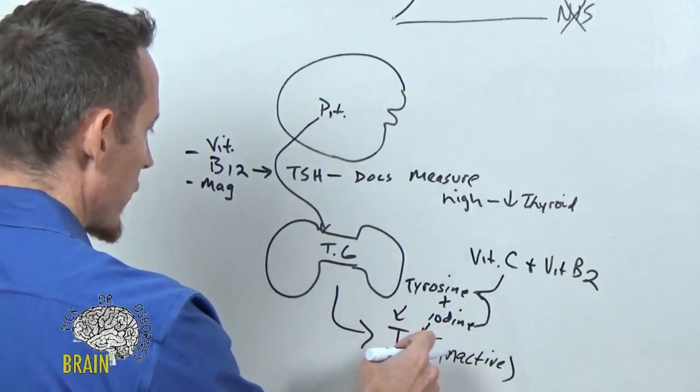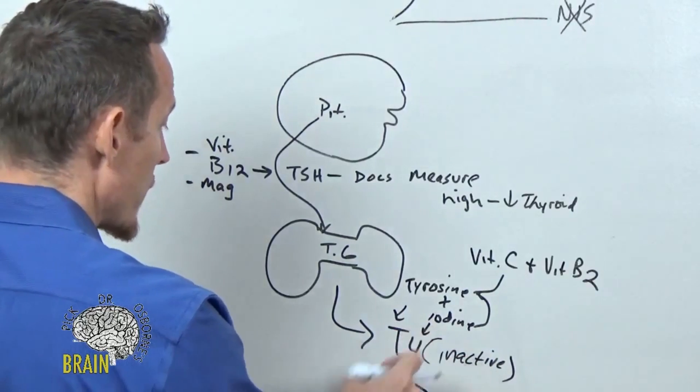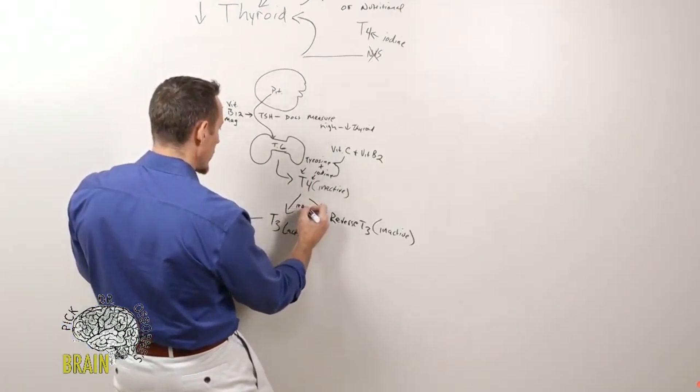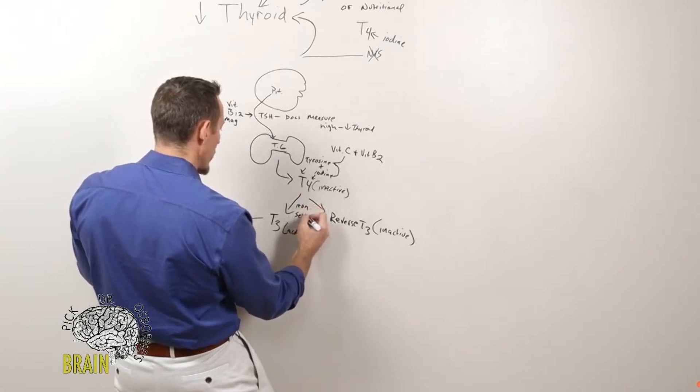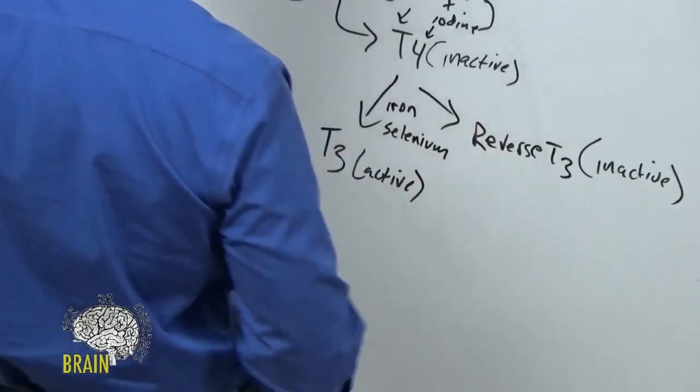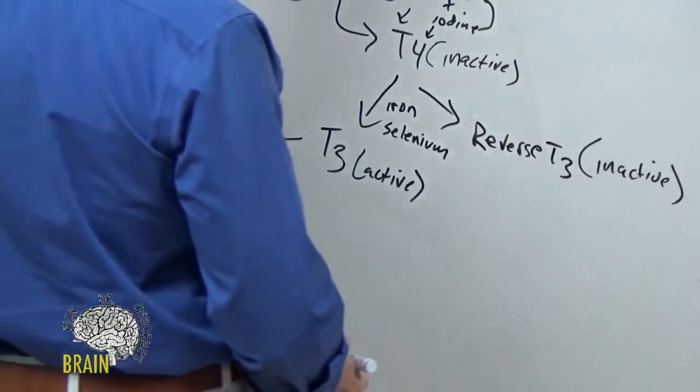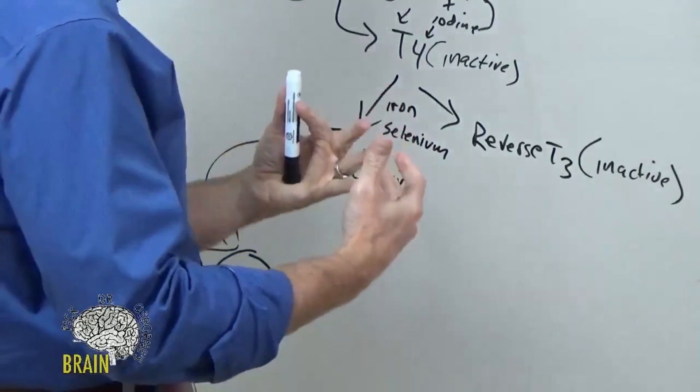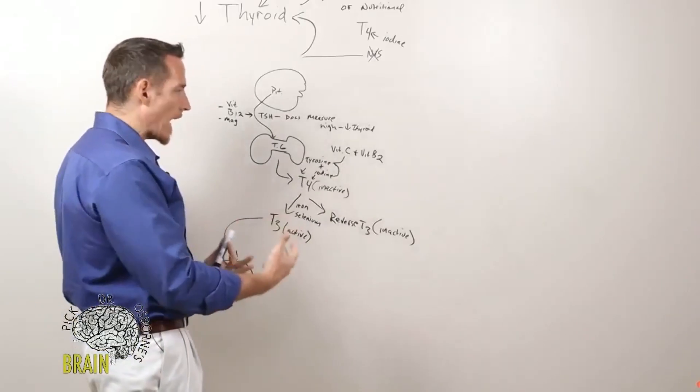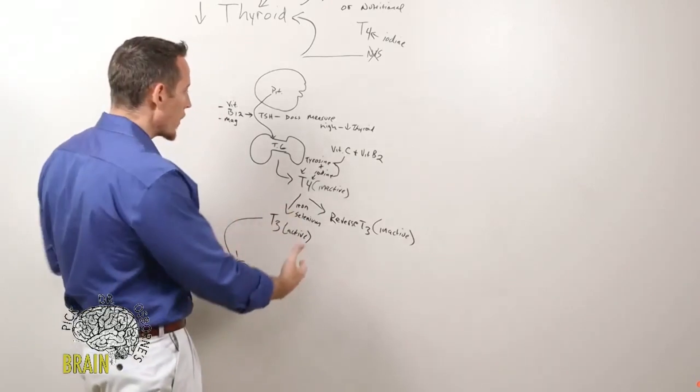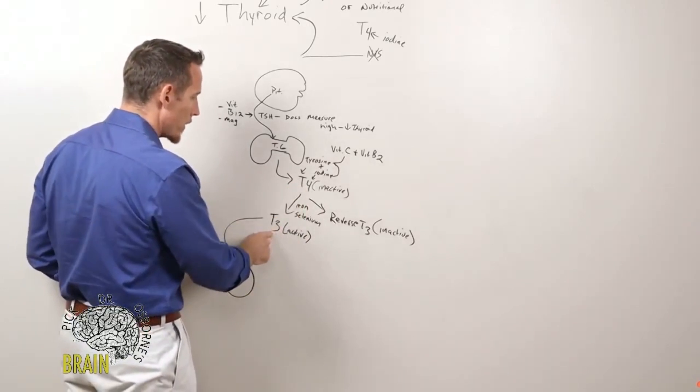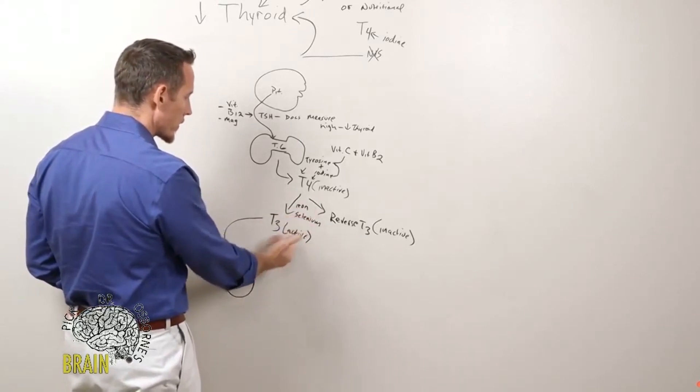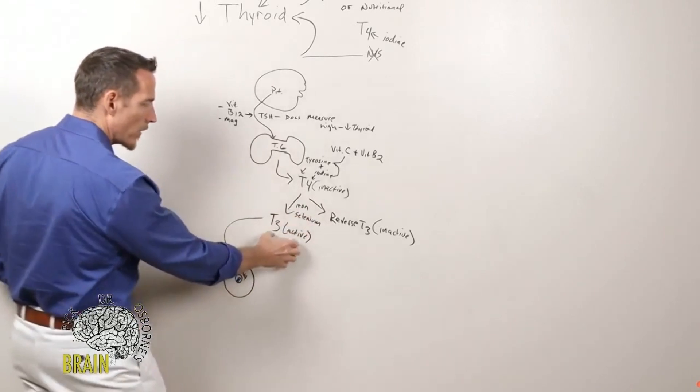We need six nutrients to get to the inactive form and we haven't even begun with this process yet. Now we have to convert this T4 into T3, hopefully. That conversion process requires iron and it requires a mineral called selenium. Selenium runs an enzyme system called a deiodinase enzyme. Deiodinase, if we deconstruct that word, means to take away an iodine - that's why it goes from T4 to T3. So that selenium helps in that process. Now we've added two new nutrients, iron and selenium, to get to T3. Now we have an active form of thyroid hormone.